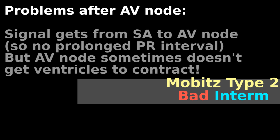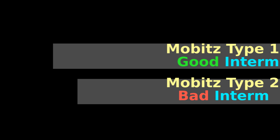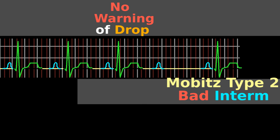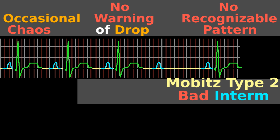The bad intermediate of Mobitz type 2 means you've got major problems after the AV node, in the bundle of His or Purkinje fibers. Like Mobitz type 1, this ECG also shows dropped beats. However, these dropped beats are not preceded by warning signs of waves getting farther and farther apart. Instead, the dropped beats happen more chaotically, without warning signs, so there's no recognizable pattern.